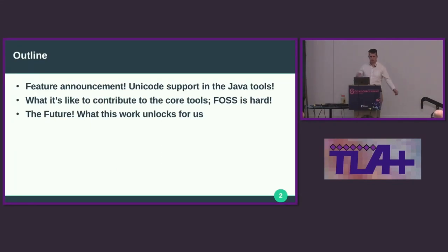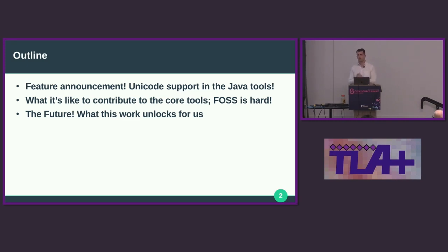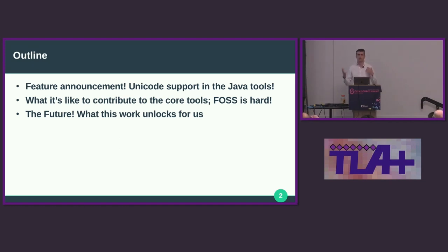Here's what we're going to talk about during this quick talk: a feature announcement — Unicode support in the Java tools — I'll go over what that means and what still needs to be done. I'm going to go over what it's like to actually contribute to the core tools. Open source software has its difficulties compared to corporate software, and I'll go over that sort of transition. And also the future — what this work unlocks for what we can do with the foundation going forward involving the language.